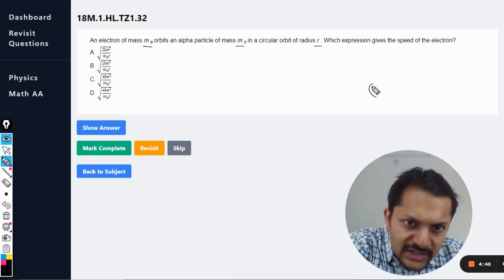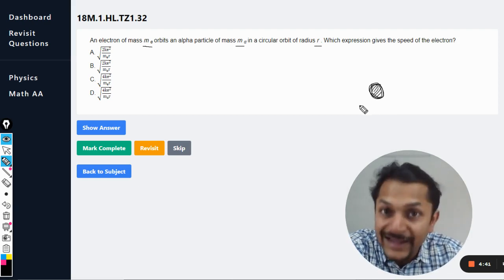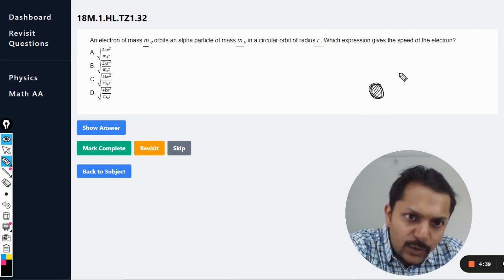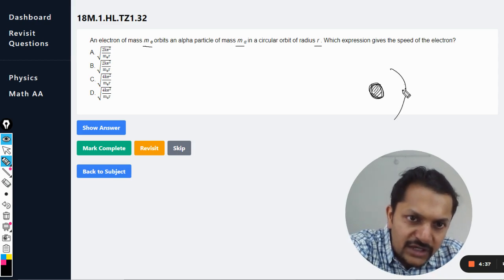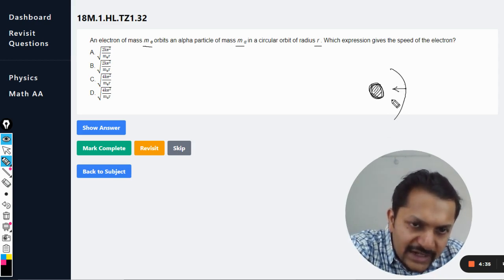So what is written here is like this is the alpha particle, and what is the alpha? It is the nucleus of helium. And there is one electron which is revolving here. Obviously this electron is being acted upon by the electric force.